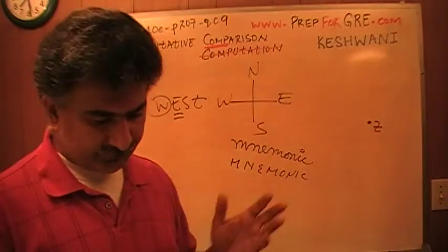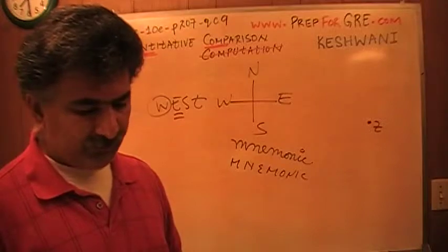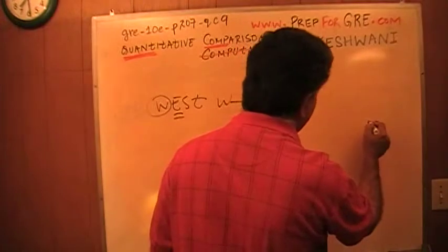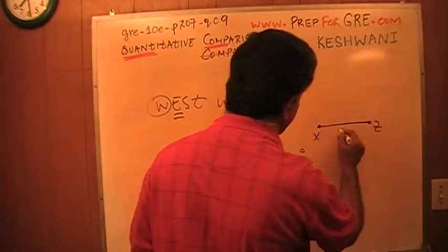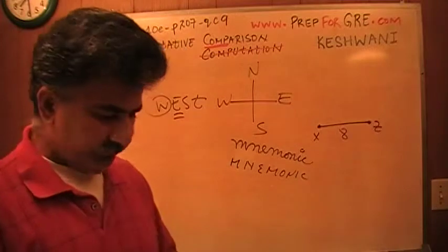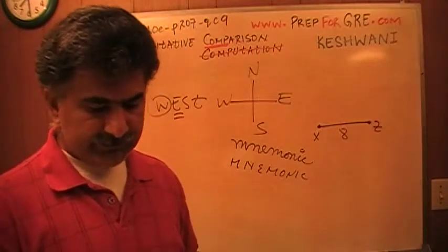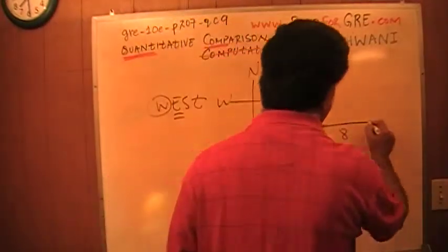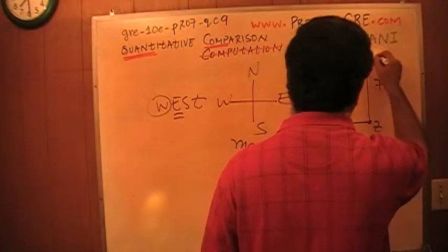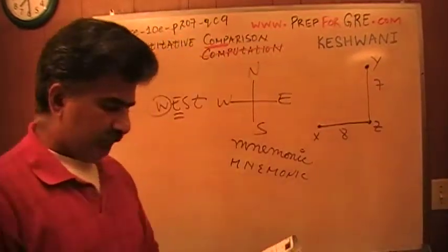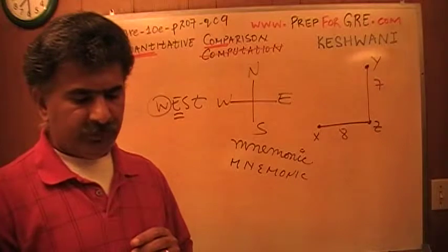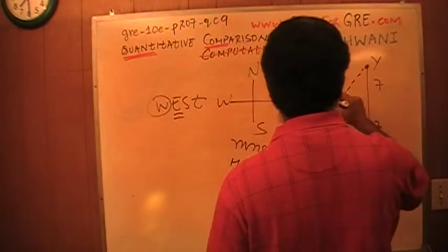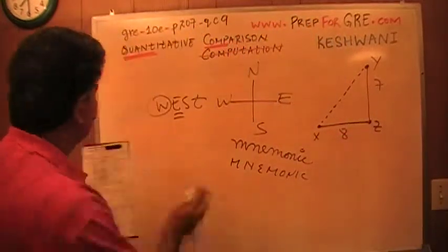Let's take a look at the problem here. X is 8 miles due west of Z, so I know west is this way, 8 miles. So between Z and X is 8 miles. So far so good. And Y is 7 miles due north of Z. And the north is up there, so 7 miles and here is your Y. What is it that they want you to compare? A distance from X to Y. Let me erase this part here.